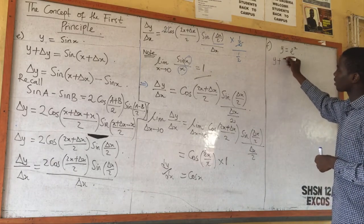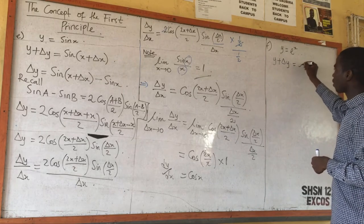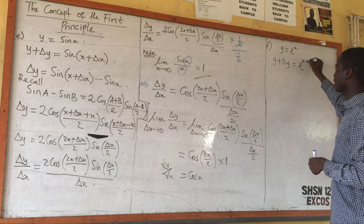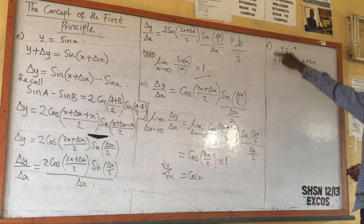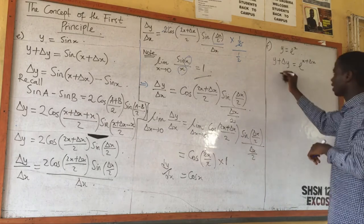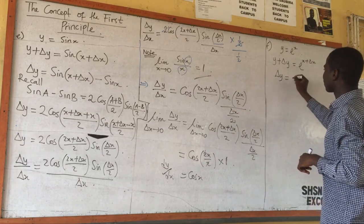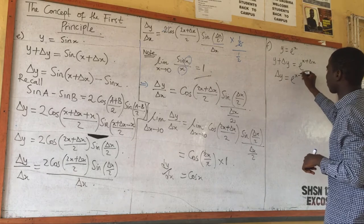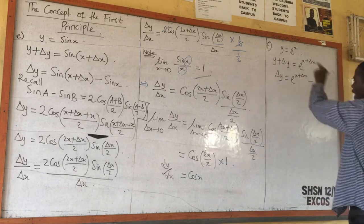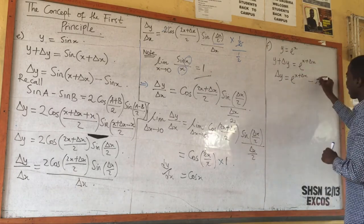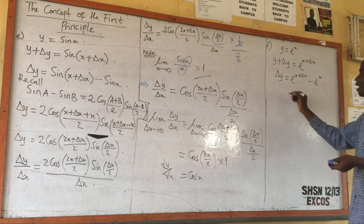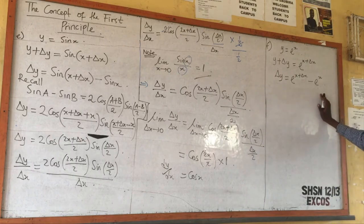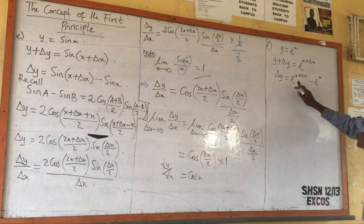Add increment: y plus delta y equal to exponential s plus delta s. Subtract y from both sides. I have delta y is equal to exponential s plus delta s minus y. But y is exponential s. So from here, what I can see is that exponential s is common.